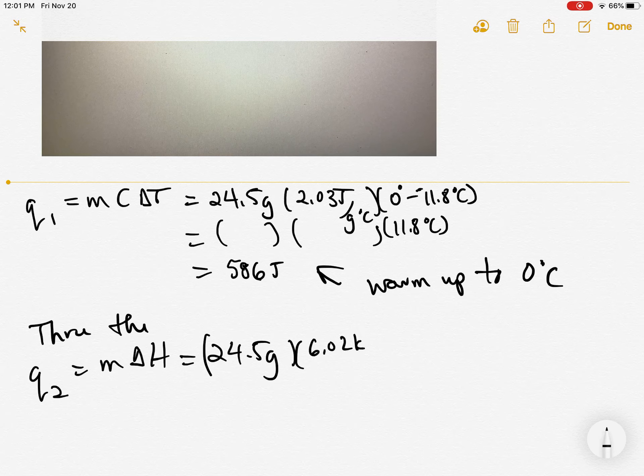So we've got 24.5 grams times the delta H given, which was 6.02 kilojoules per mole. Well, our units can't cancel out. So I have to switch from grams of water to moles of water using the molar mass.